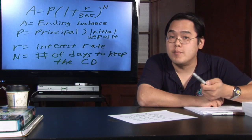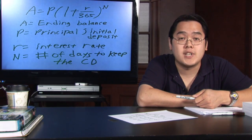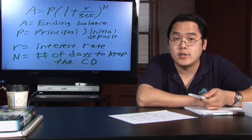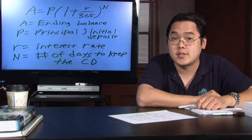Now 365, you might recognize that of course as the number of days in a year. That is because interest is compounded, generated on a daily basis.